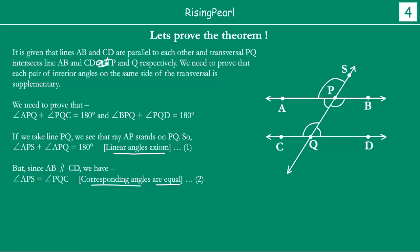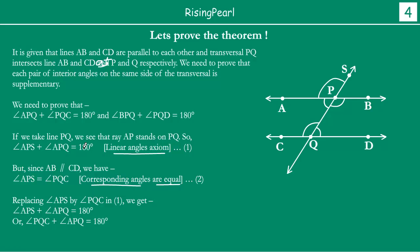From equations 1 and 2, replacing APS by PQC in equation 1, we get angle PQC plus angle APQ equals 180 degrees — and this is what we wanted to prove. Similarly, we can prove that angle BPQ plus angle PQD equals 180 degrees. Hence the theorem is proved.